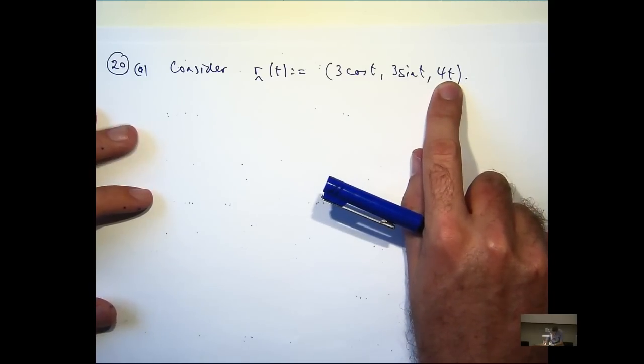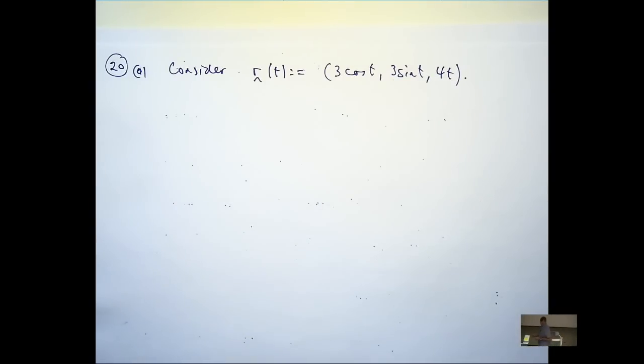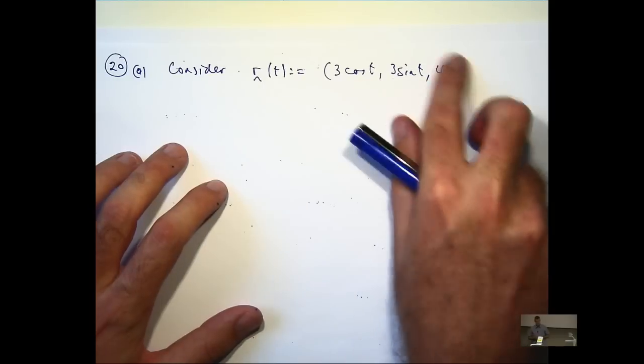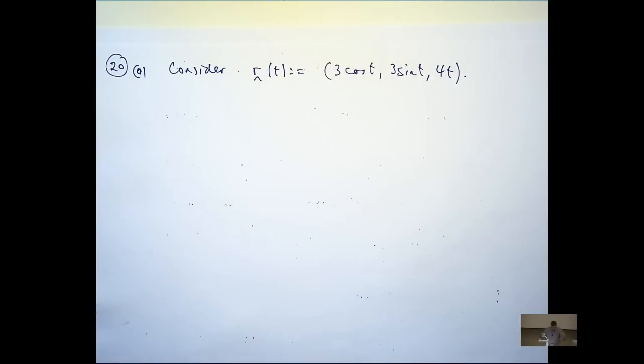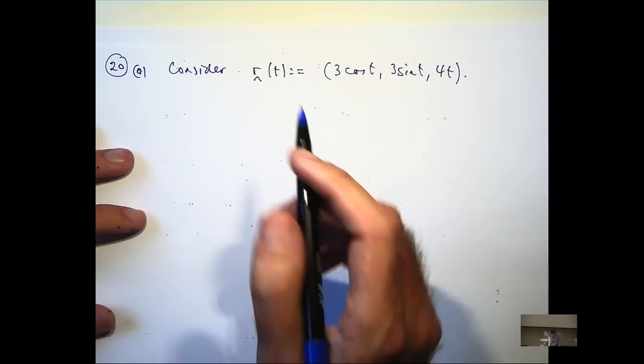Okay, so where you see the cosine and the sine, that's, you know, forget those, it'll be wrapped around this, so it'll be 4t or t squared or, you know, 3t cubed or something. We want to calculate the unit tangent vector.